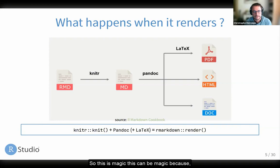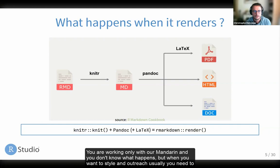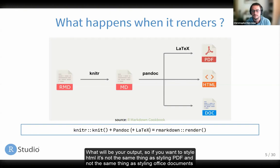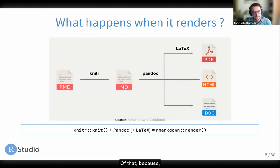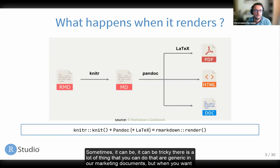This can be magic because you are working only with R Markdown and you don't know what happens. But when you want to style an output, usually you need to know what your output will be. If you want to style HTML, it's not the same as styling PDF, and it's not the same as styling Office documents. When you want to do specific things for an output, sometimes you need to know about new skills and new specific tools for that output.